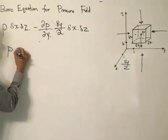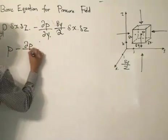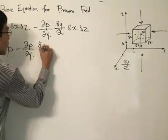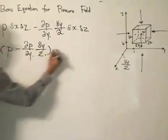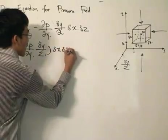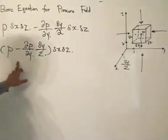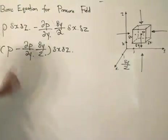Now we can simplify it and write P minus partial P partial y times delta y divided by 2, all times delta x delta z. That's the pressure, finally, the pressure equation of the pressure acting in this direction.